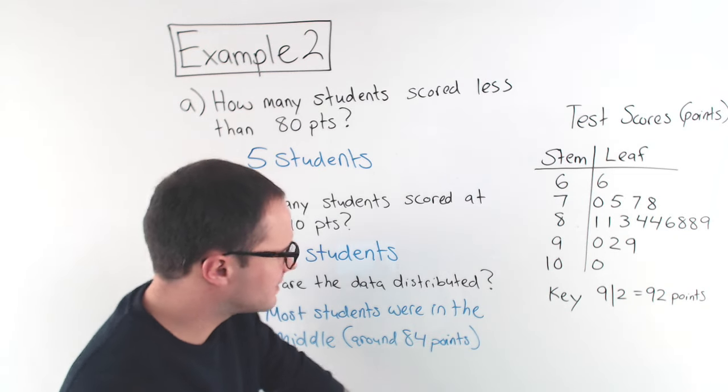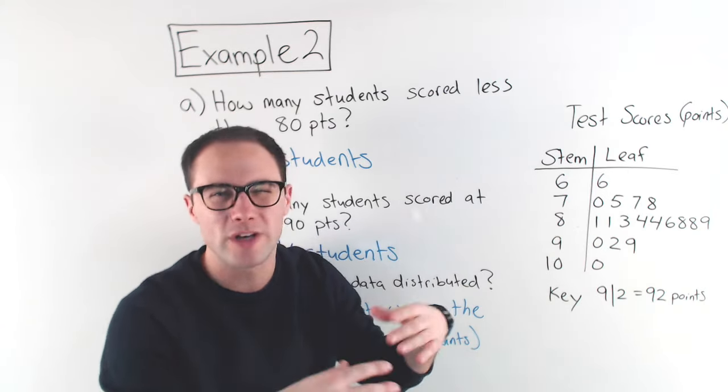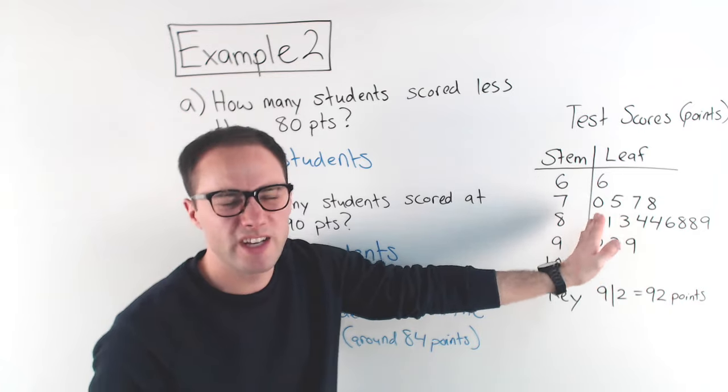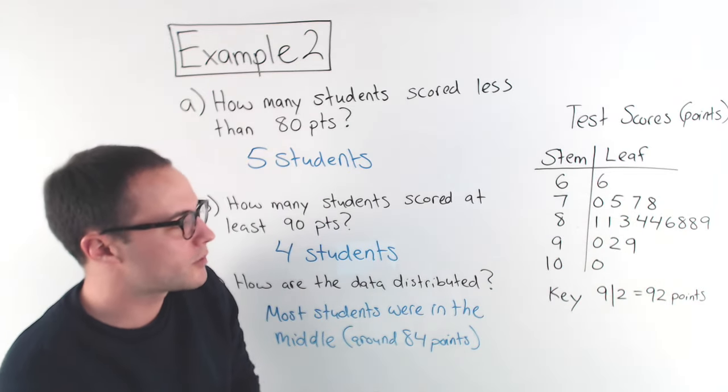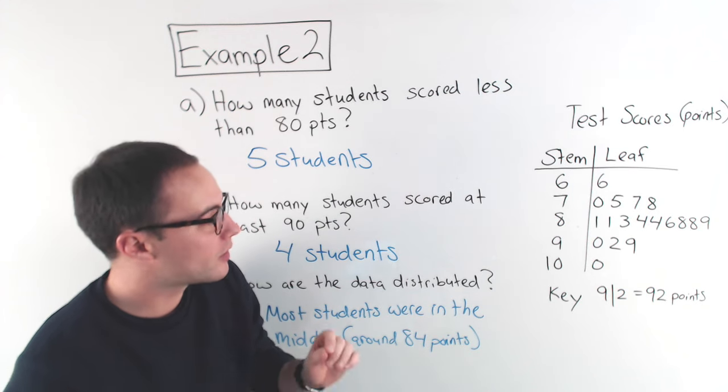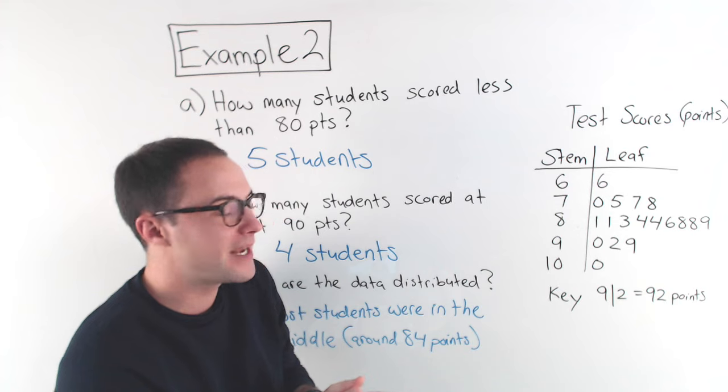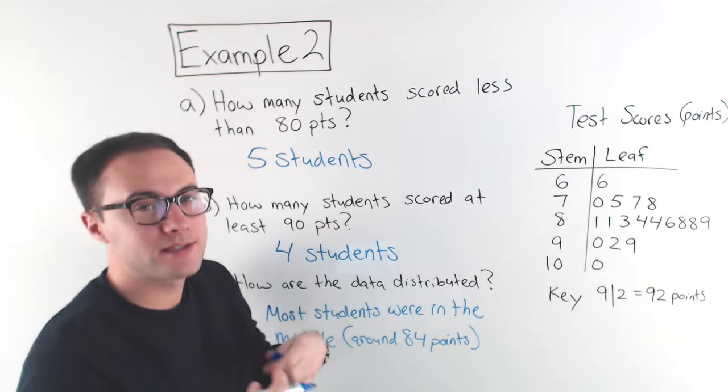Okay. Now, one last thing. You'll notice with the stem and leaf plot, when I did the example before, I put commas. You don't need to do that. I probably shouldn't have done that. Notice here, all you need to really do is just list the numbers for the leaf. So, don't worry about doing commas. And also, if you're wondering, can we use this for decimals? Like, what if my data is decimals? And yes, you can.